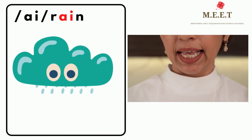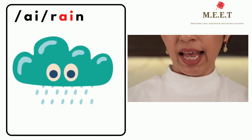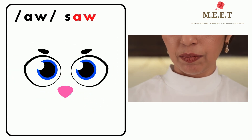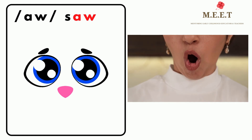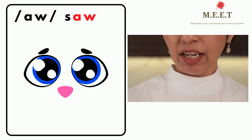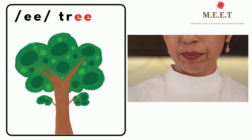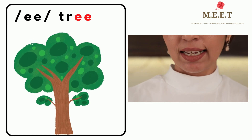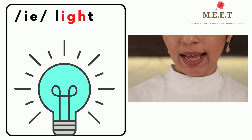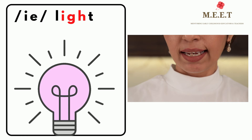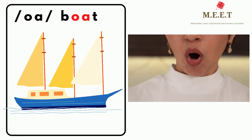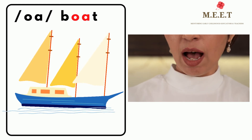We will now move on to diphthongs, where two vowel sounds come together to make one sound in a syllable. 'ay' as in the middle sound in rain. 'aw' as in the end of the word saw. 'ee' as in the end of the word tree. 'i' as in the middle sound in light. 'oh' as in the middle sound in boat.